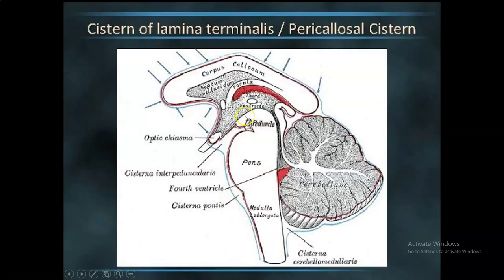The pericallosal cistern is around the surface of the corpus callosum. It contains the anterior cerebral arteries, is continuous posteriorly with the quadrigeminal cistern, and continuous downwards with the lamina terminalis cistern and the chiasmatic cistern.